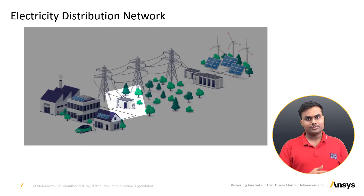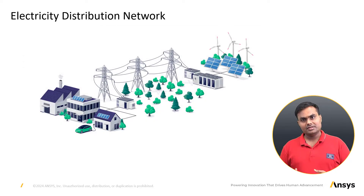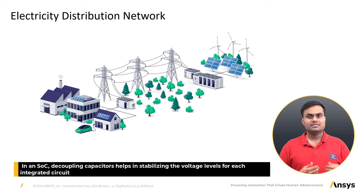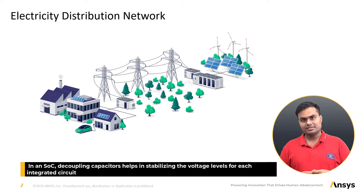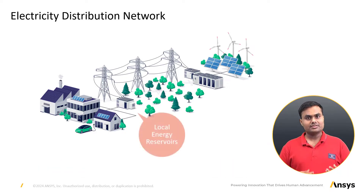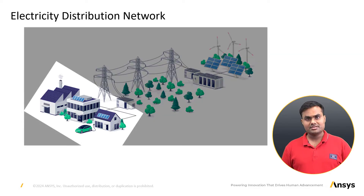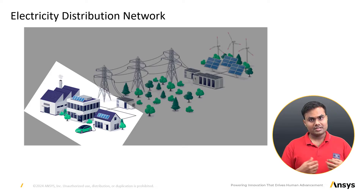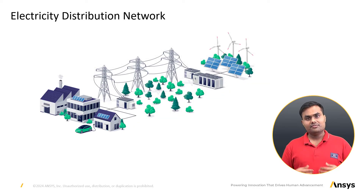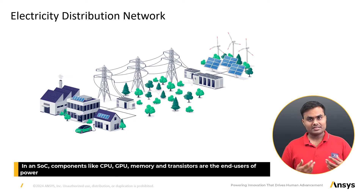In substations, voltage step-down transformers reduce the voltage. Power is then sent to local transformers. Similarly, decoupling capacitors within a SoC stabilize the voltage level locally for each integrated circuit, acting as a local energy reservoir to handle transient current demands. Finally, power goes through protective fuses, breakers, and switches in our homes.